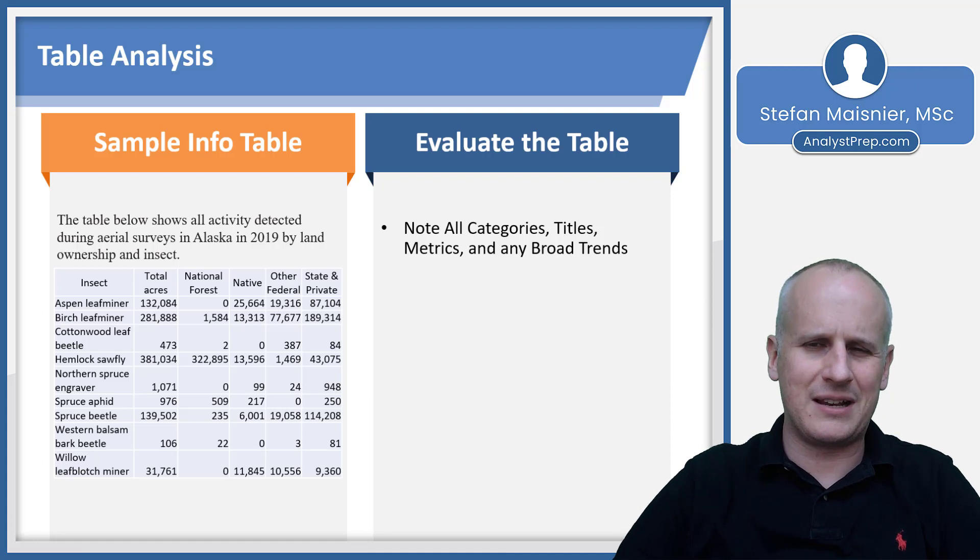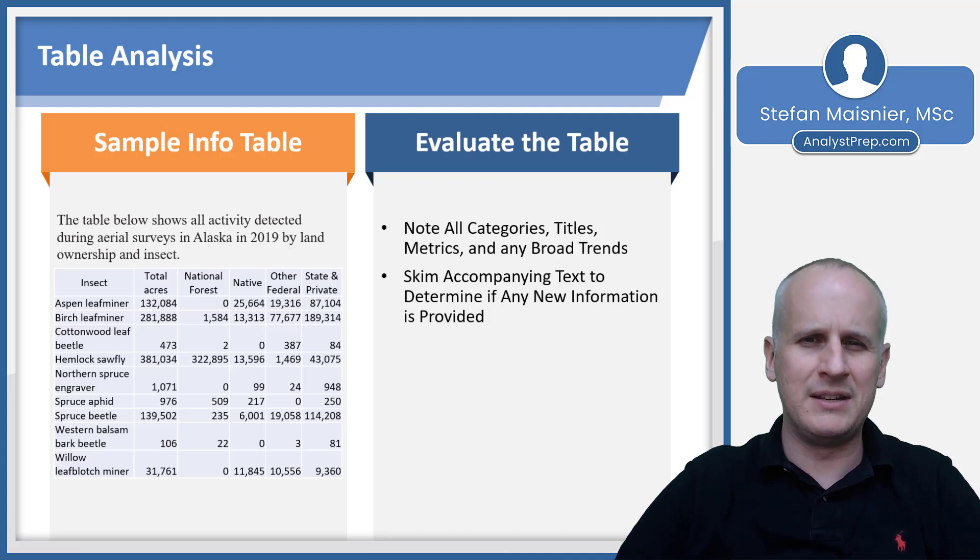We did skim the text, and we probably needed to here to understand that it's by land ownership. Otherwise, we're probably wondering what the national forest, native, other federal and state and private means. So make sure that you don't completely ignore the accompanying text.